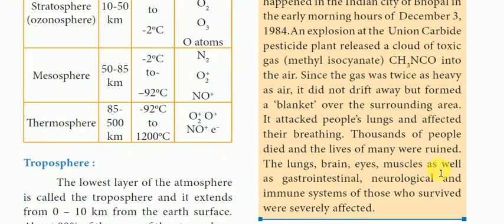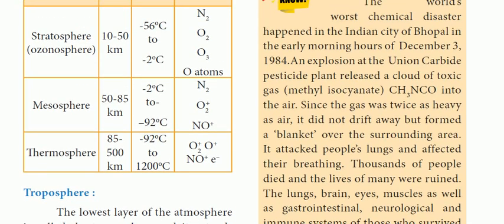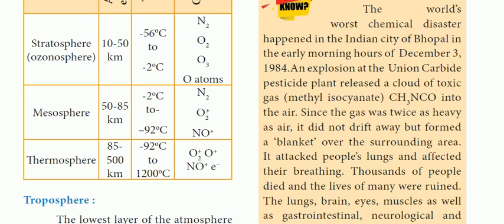The lungs, brain, eyes, and muscles, as well as the gastrological, neurological, and immune systems of those who survived were severely affected. Methyl isocyanate is twice as heavy as air, with a density greater than air, so it settled close to the ground. This caused immediate neurological problems. This tragedy is one of the most significant examples related to air pollution.